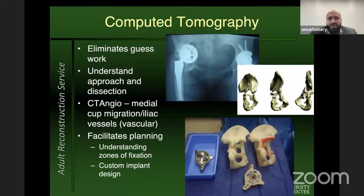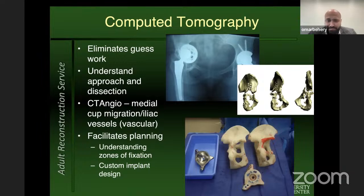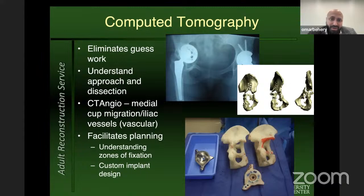A CT scan eliminates a lot of guesswork. It allows you to understand the surgical approach, how you'll dissect through, and how you'll remove components. In cases with significant superior medial migration — Kaprosky 3B defects — I routinely get a CTA to make sure iliac vessels are not in close proximity. Even if you're not using a custom implant, a CT scan helps plan your fixation construct and understand where screws need to go for good fixation.